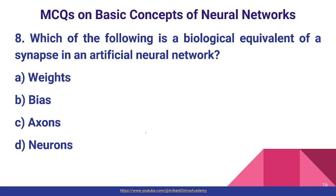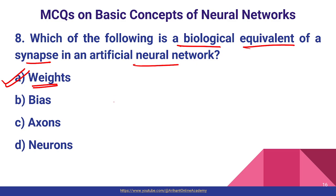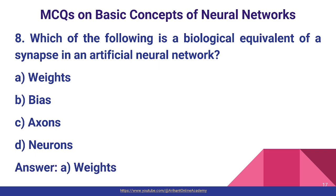Question number eight: which of the following is the biological equivalent of a synapse in an artificial neural network? In an artificial neural network, weights are considered the counterpart of synapses. Just like synapses in a biological neural network, here it is weights.